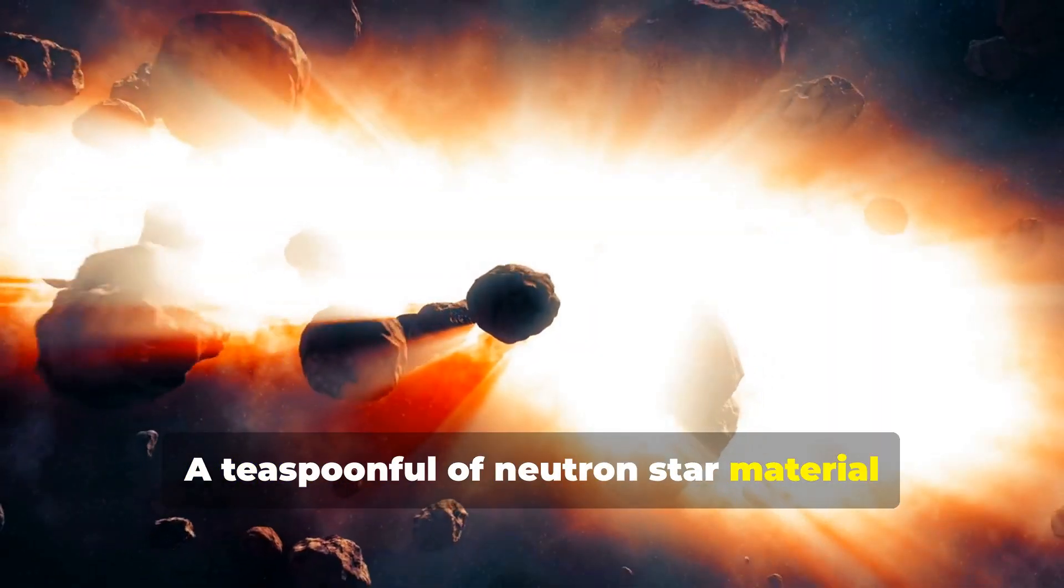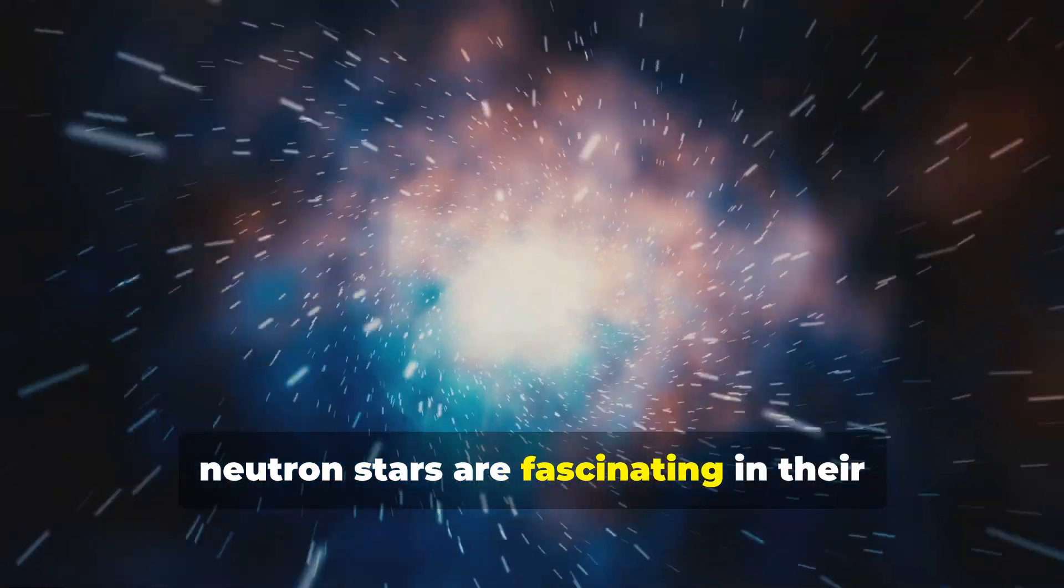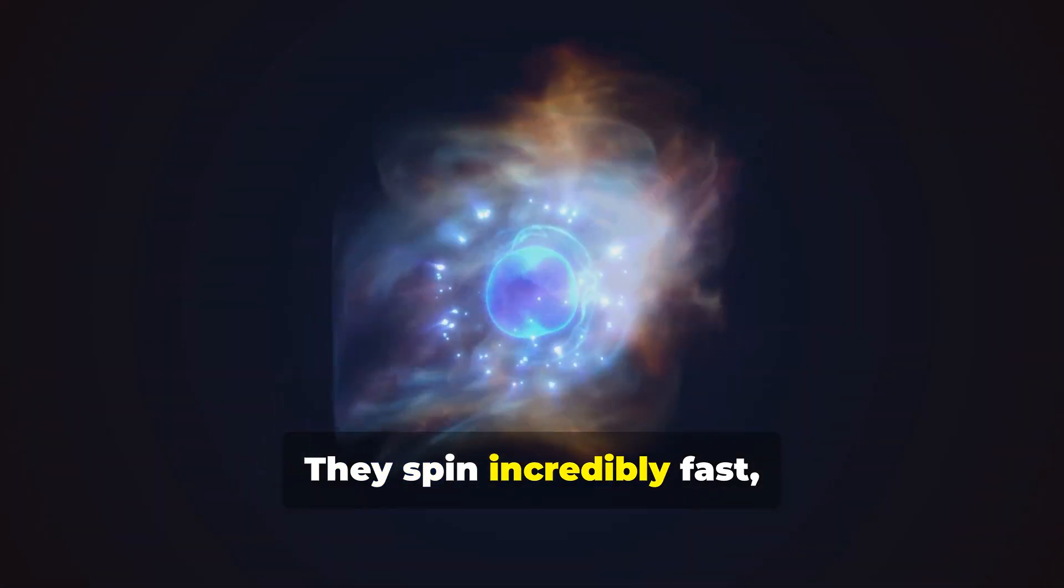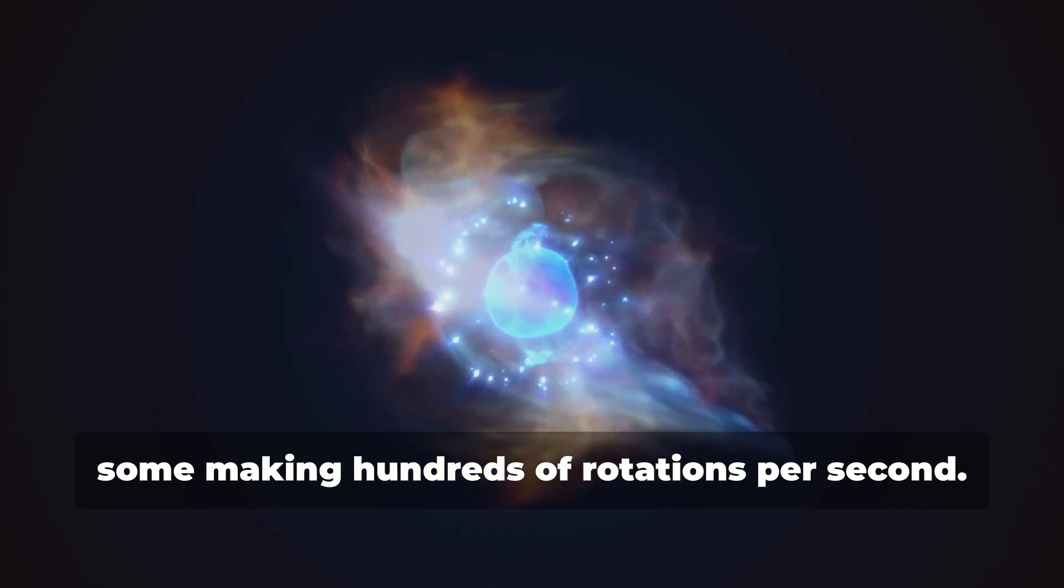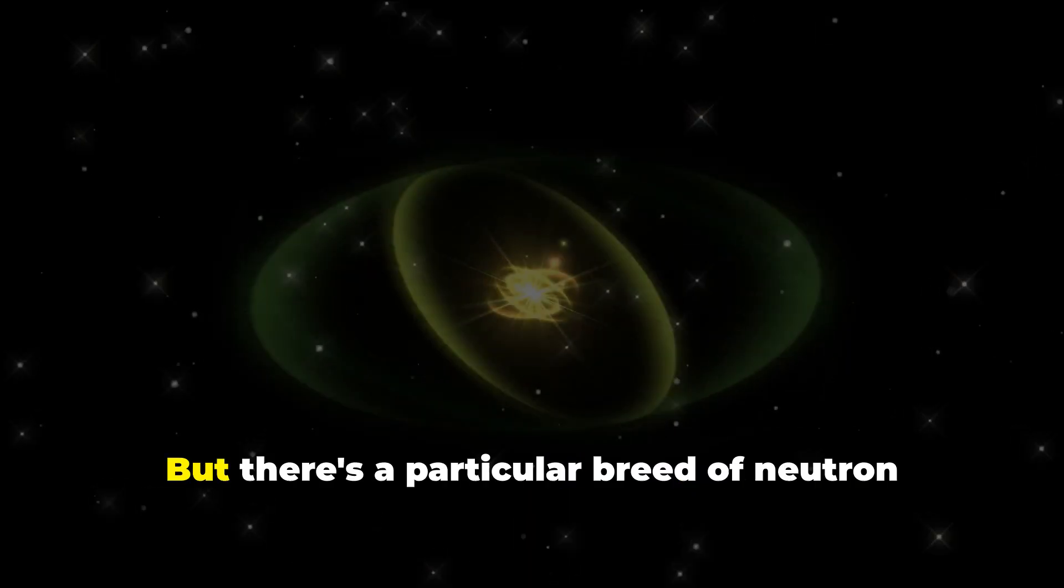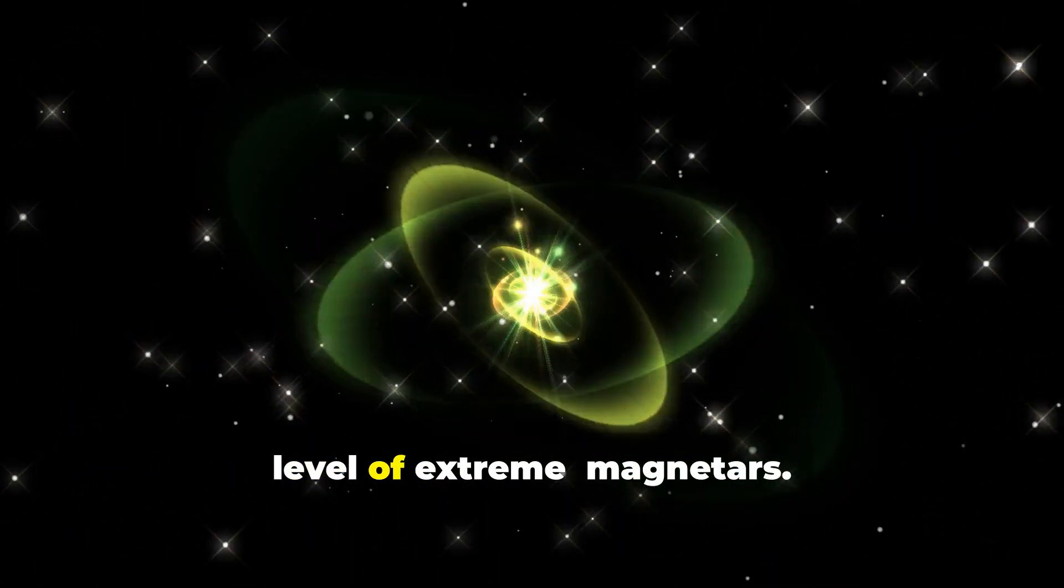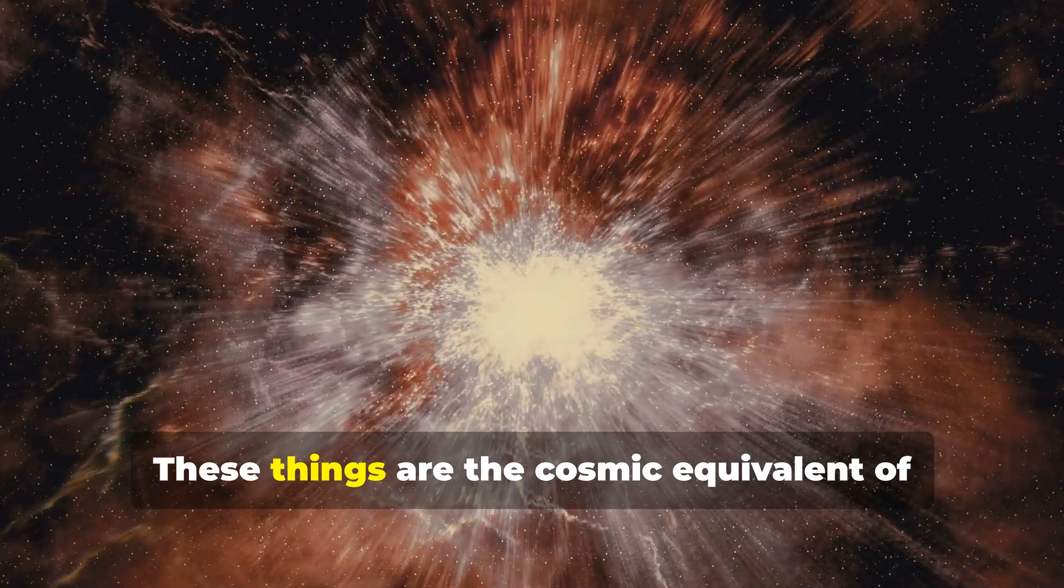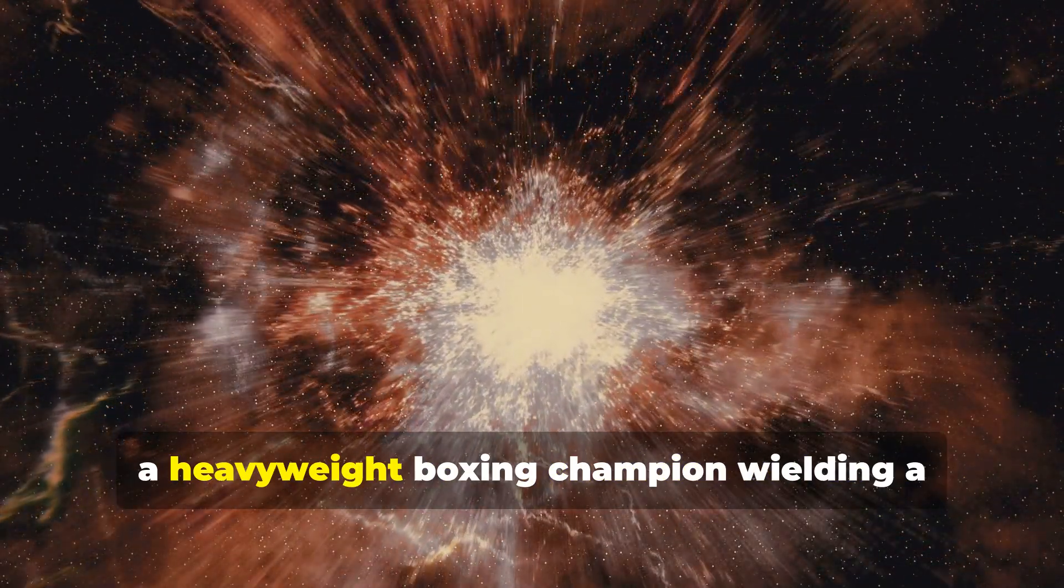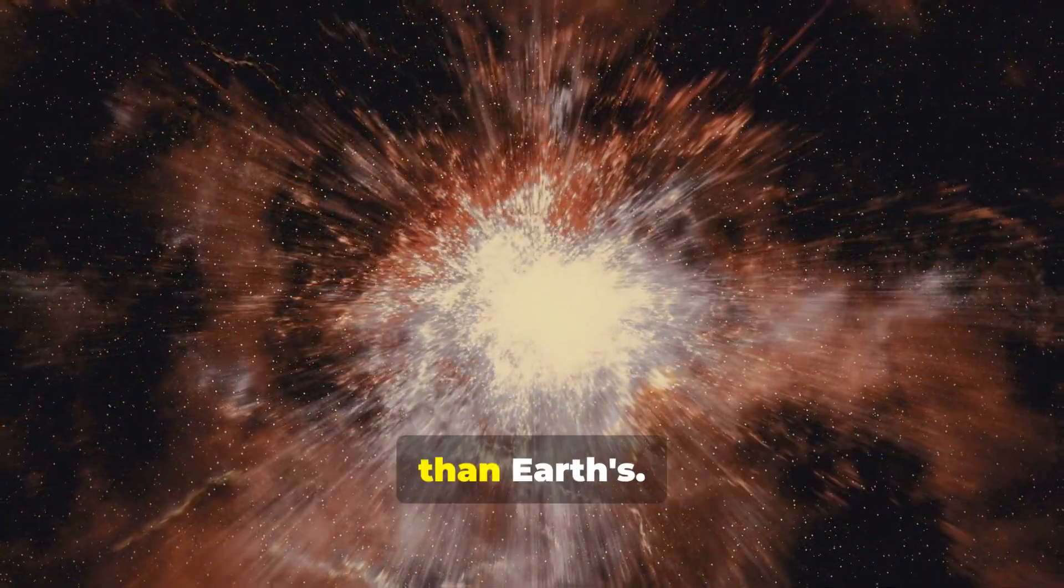A teaspoonful of neutron star material would weigh billions of tons on Earth. Now, neutron stars are fascinating in their own right. They spin incredibly fast, some making hundreds of rotations per second, and they emit beams of radiation like cosmic lighthouses. But there's a particular breed of neutron star that takes things to a whole new level of extreme, magnetars. These things are the cosmic equivalent of a heavyweight boxing champion wielding a magnetic field a trillion times stronger than Earth's.